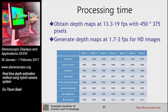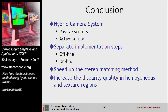To reduce the time complexity, we have to enhance those steps. In conclusion, to estimate depth, we use the hybrid camera system, which contains passive sensors and active sensors. To accelerate the method, we separate implementation steps into online and offline steps. This allows us to speed up the stereo matching method and increase the disparity quality in homogeneous and textured regions.